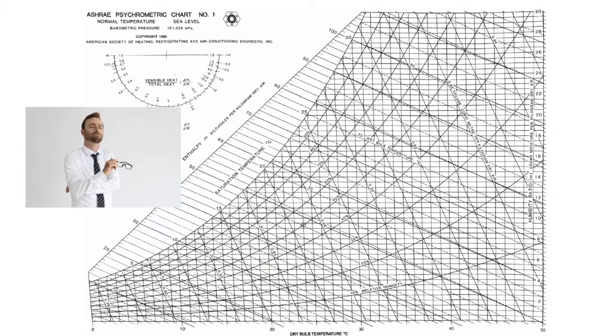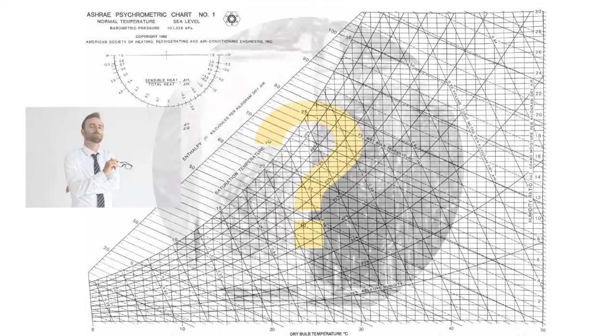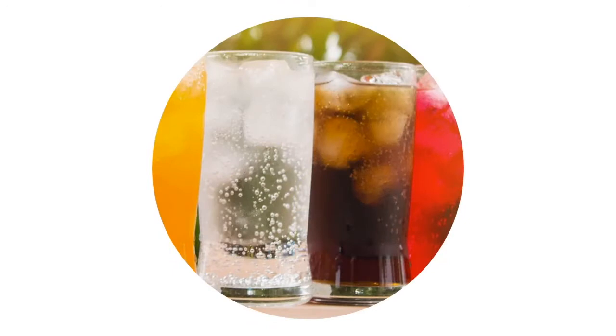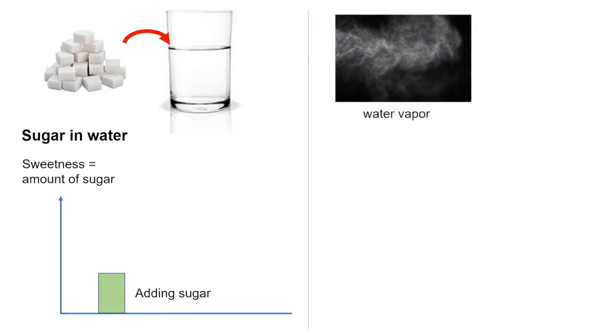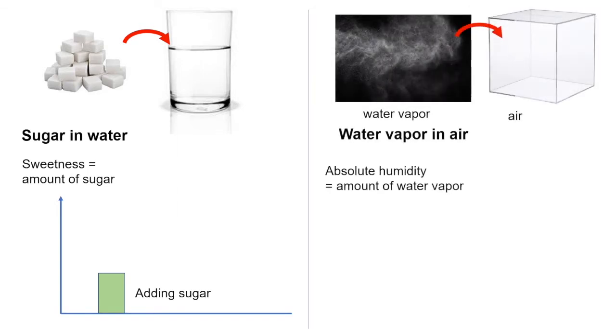To first understand about water vapor in air, let's make a simple analogy. Think about one of your favorite drinks. Unless you are a health conscious person or a hardcore coffee drinker, you are probably thinking about something sweet. Yes, sugar can be dissolved in water, and the sweetness of the liquid depends on the amount of sugar inside water. This is analogous to water vapor in air. A certain amount of water vapor can be contained in air, and the amount of it is called absolute humidity.